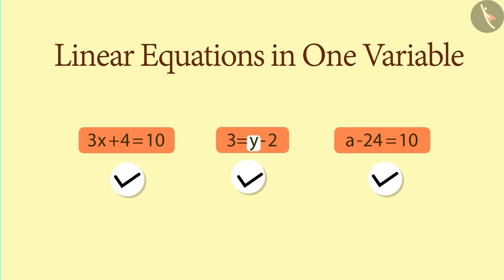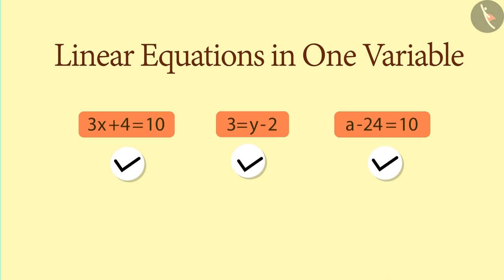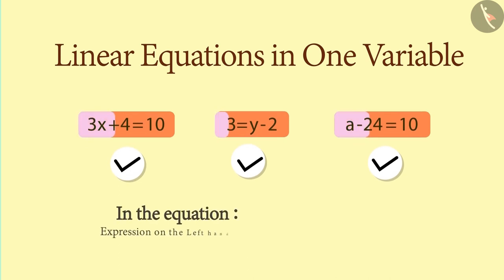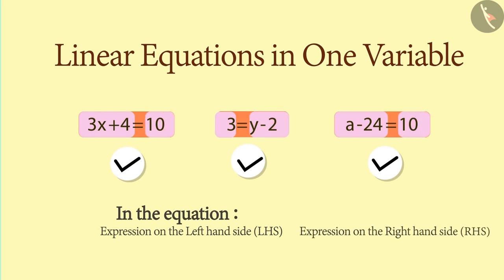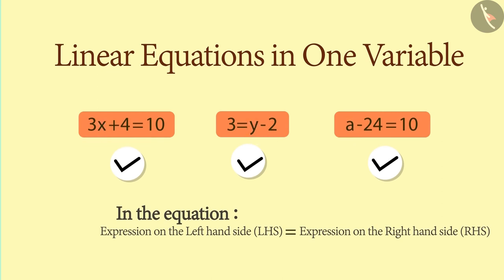In any equation, the position of the variable does not matter. The equation only tells us that the value of the expression on the left will be equal to the value of the expression on the right. So in a linear equation with one variable, the variable can be present on either side of the equation.